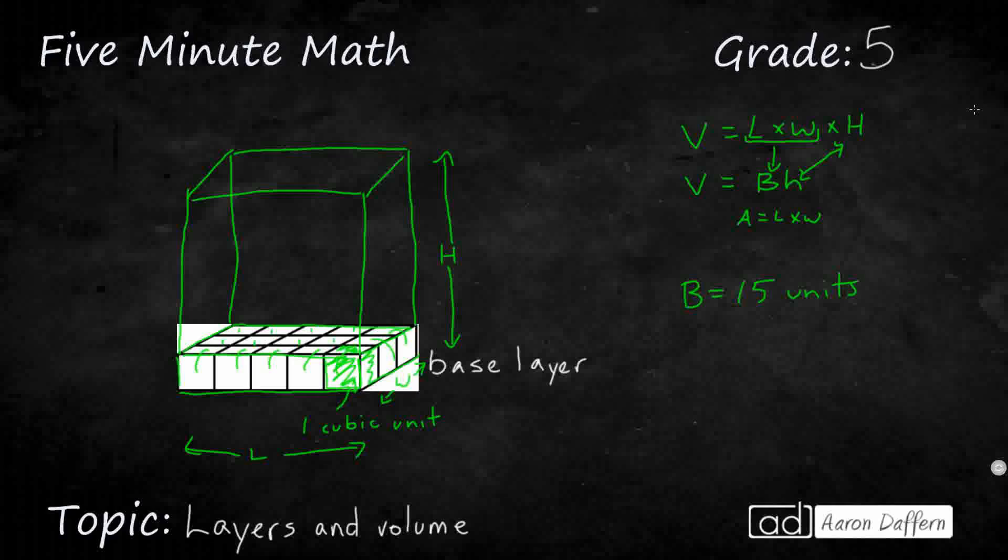Or we could have thought, well, what is my length? One, two, three, four, five. What is my width? One, two, three. So five times three. That's this length times width. This five times three. So the area of the base is going to be fifteen units. Either way you want to look at it, we multiply the length times width, or we just count the number of cubes.